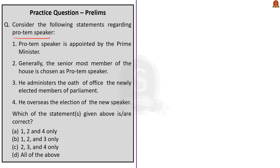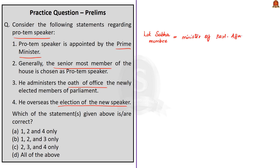Question on pro tem speaker: Statement 1 — the pro tem speaker is appointed by the Prime Minister. Statement 2 — generally the senior-most member of the house is chosen as pro tem speaker. Statement 3 — he administers the oath of office to newly elected members. Statement 4 — he oversees the election of the new Speaker. The pro tem speaker is actually appointed by the President for Lok Sabha and the Governor for a legislative assembly, making Statement 1 incorrect. Statements 2, 3, and 4 are correct. The right answer is option C — two, three, and four only.